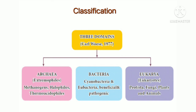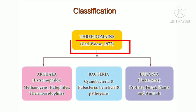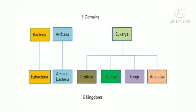For the classification of microorganisms, we use the three-domain and six-kingdom classification proposed by Carl Woese in 1977. The three domains are Archaea, Bacteria, and Eukarya. Archaea includes extremophiles, Bacteria includes cyanobacteria and eubacteria, and Eukarya includes Protista, Fungi, Plantae, and Animalia.